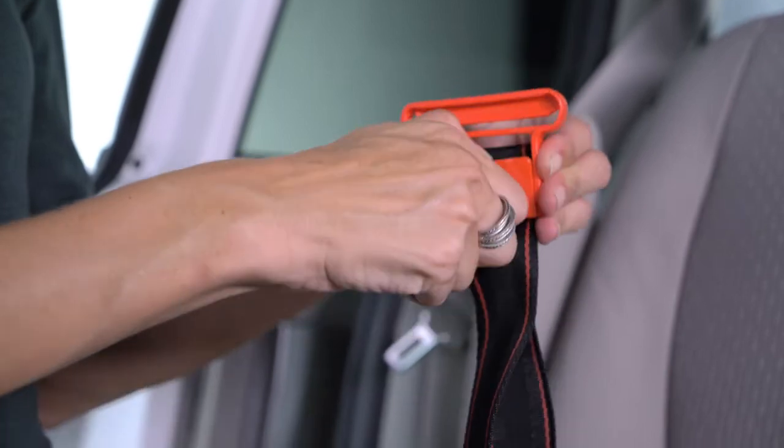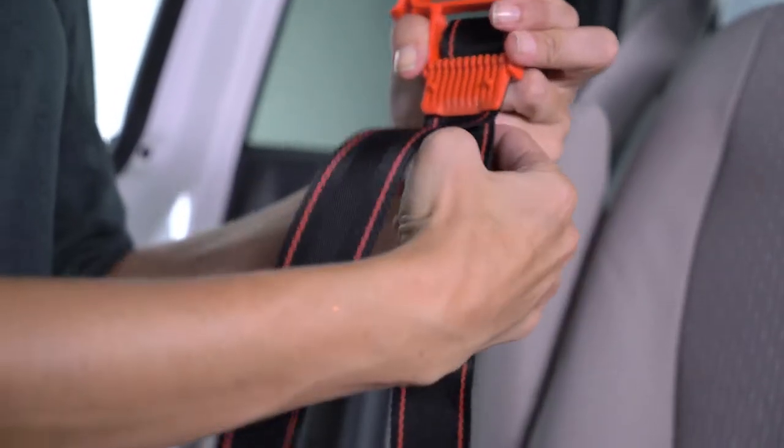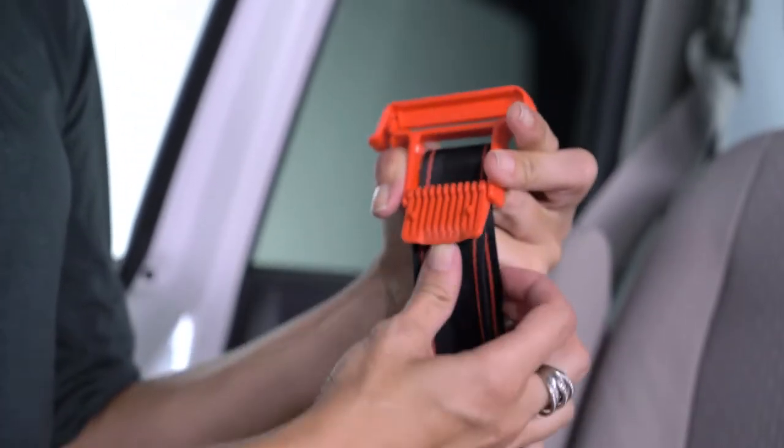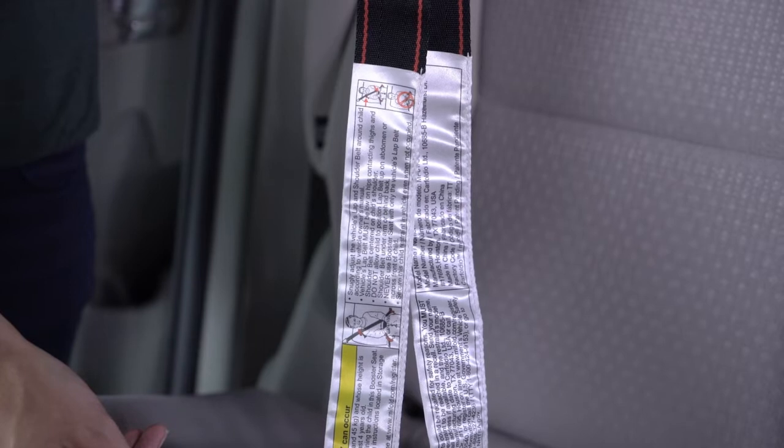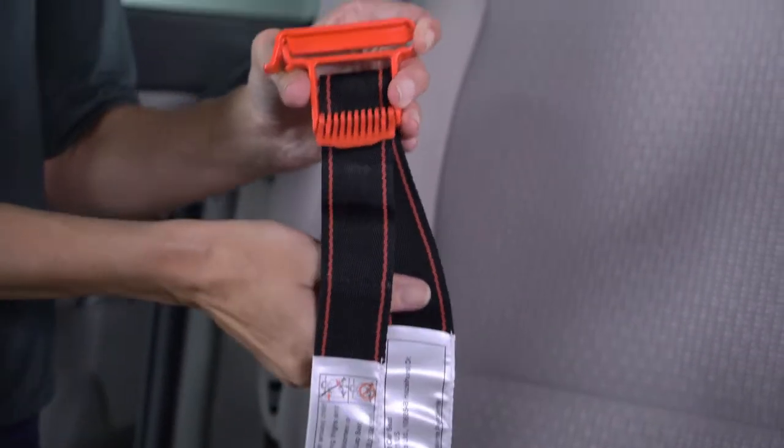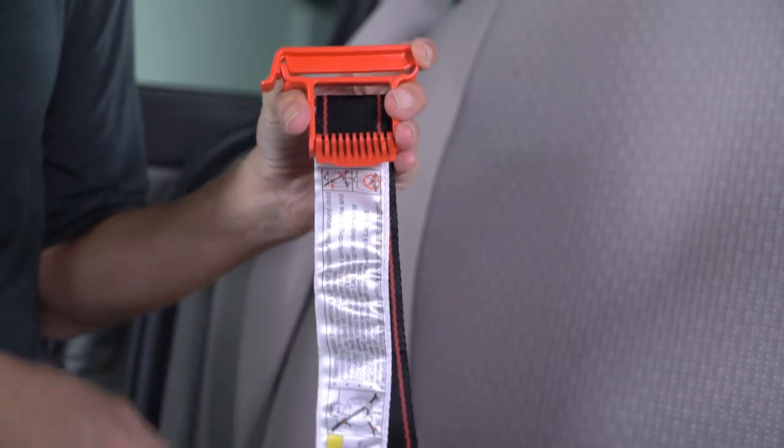To adjust the position of the shoulder belt guide, pull out on the shoulder belt guide adjustment clip to release the shoulder belt guide strap. Slide the guide into position and then press down on the adjustment clip to lock it in place. If your MyFold seat has labels attached to the strap, do not adjust the shoulder belt guides onto the labels. You only need to adjust on the black and red strap.